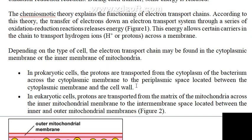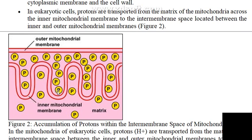In eukaryotic cells, protons are transported from the matrix of the mitochondria across the inner mitochondrial membrane to the intermembrane space. The inner mitochondrial membrane contains the embedded electron transport chain components. The space between the outer mitochondrial membrane and the inner mitochondrial membrane is called the intermembrane space, and protons from the matrix are transported into this space.